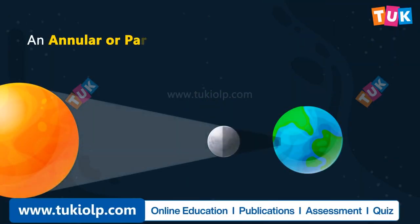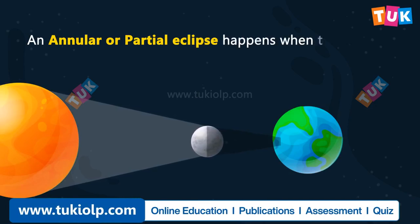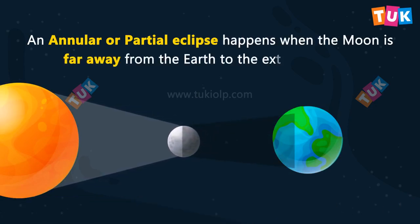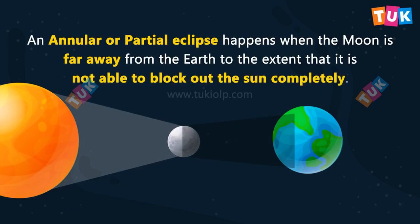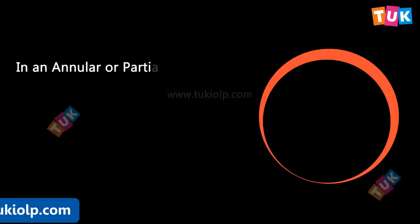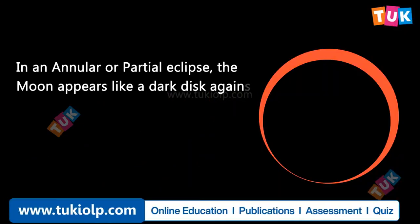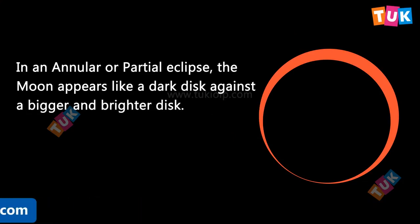An annual or partial eclipse happens when the moon is far away from the earth to the extent that it is not able to block out the sun completely. In an annual or partial eclipse, the moon appears like a dark disk against a bigger and brighter disk.